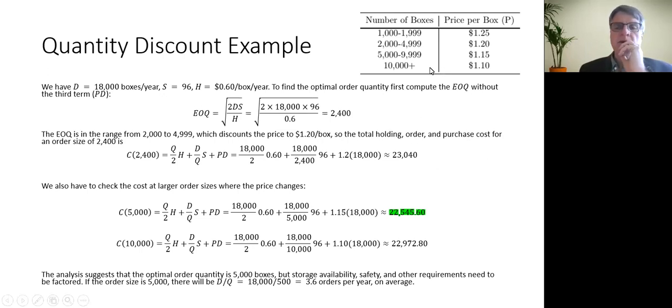Now, I do need to also explore a few other points. What if I order up and go for 5,000 to squeeze into this next level discount, like dropping the price from $1.20 to $1.15? Is that something that makes any sense? So I'll test it.